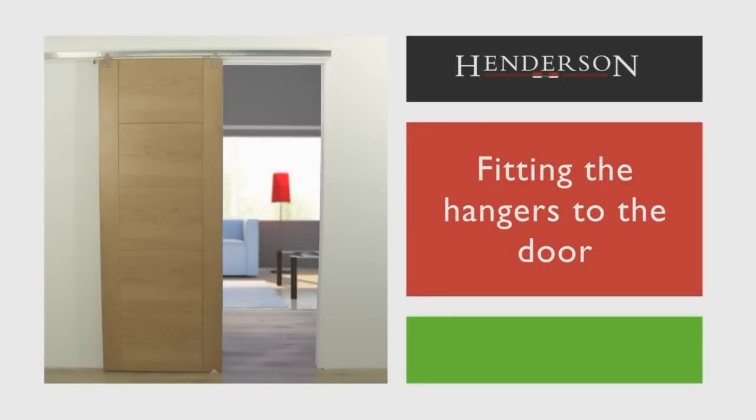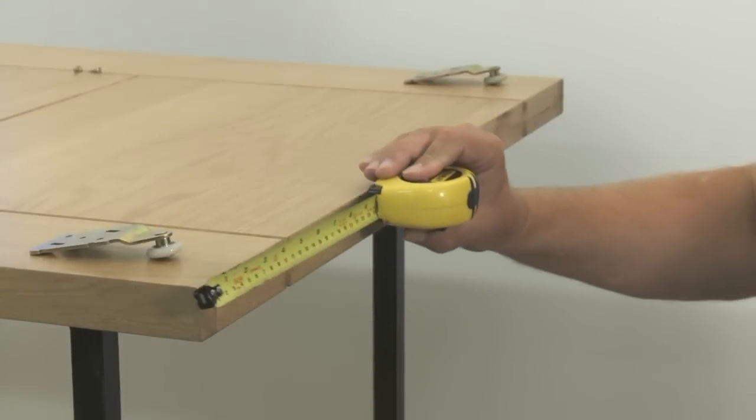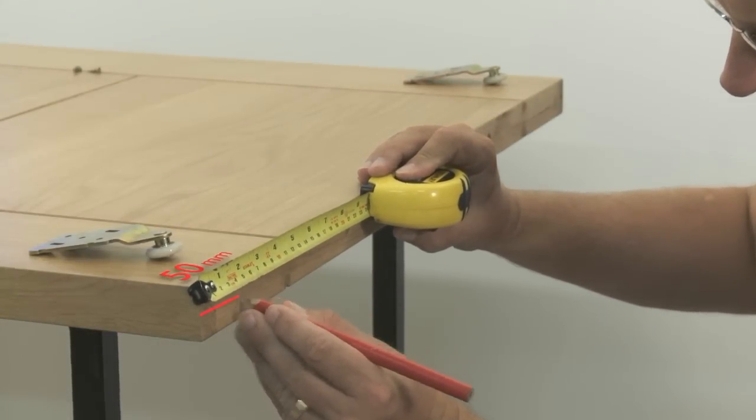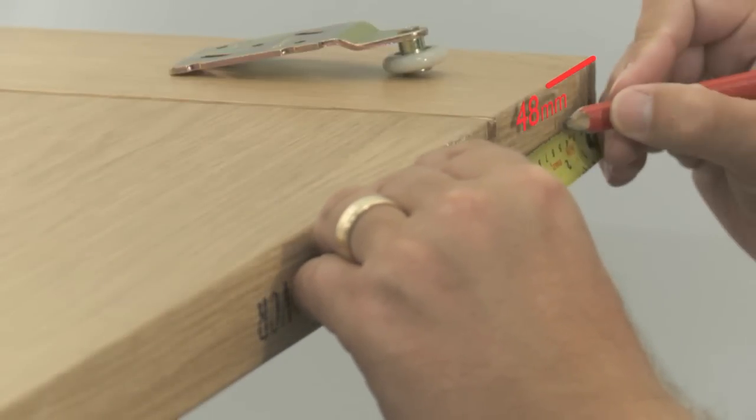Fitting the hangers to the door: To attach the hardware to the door, start by marking out the two hanger positions 50mm from each edge of the door.